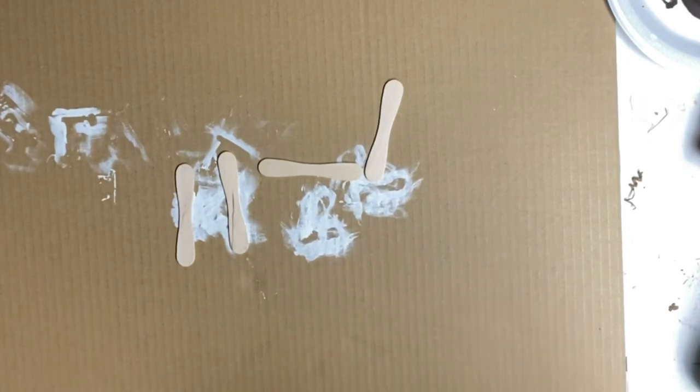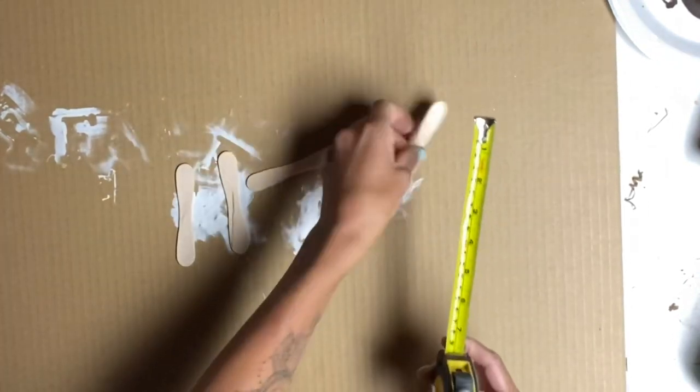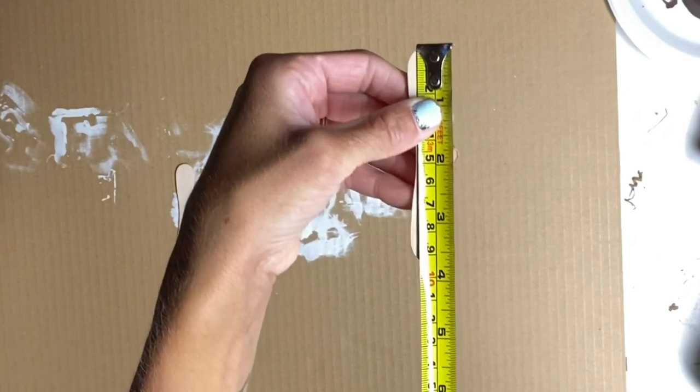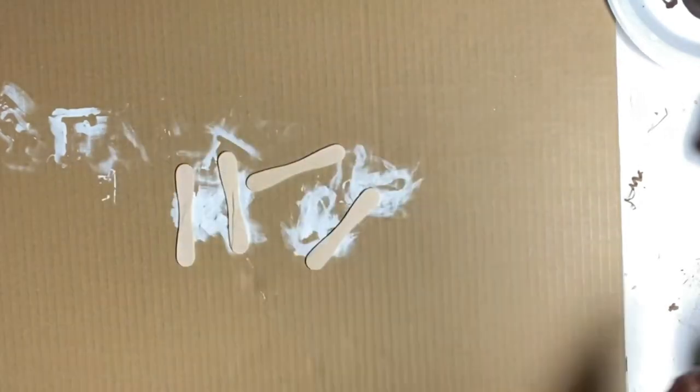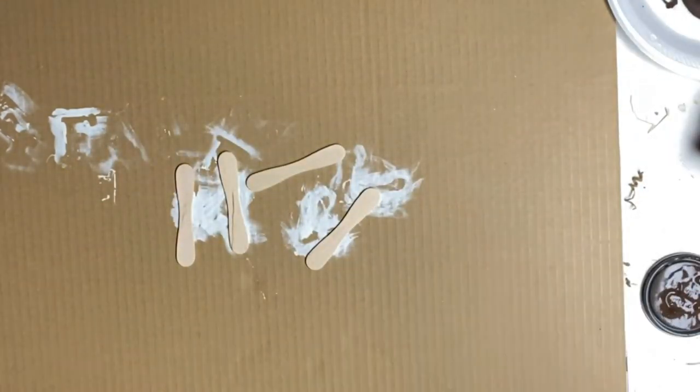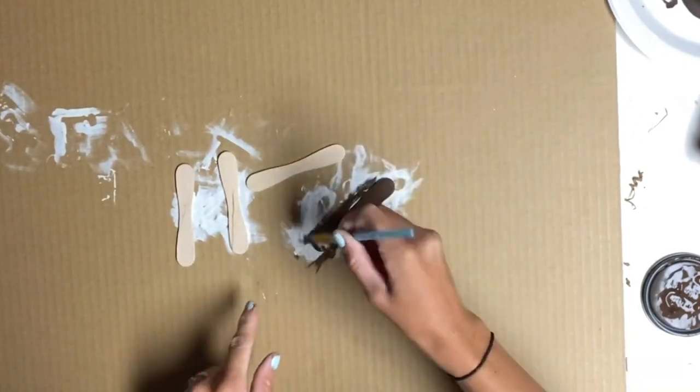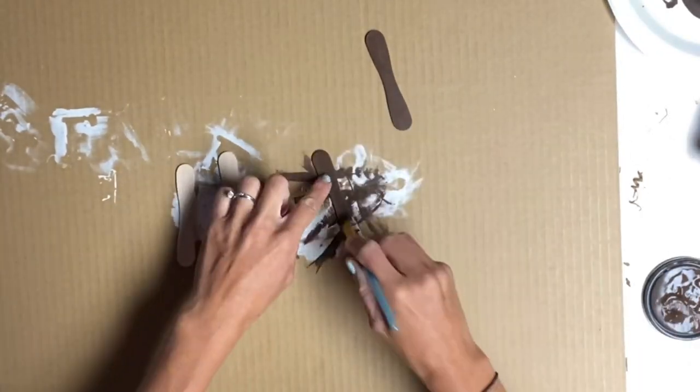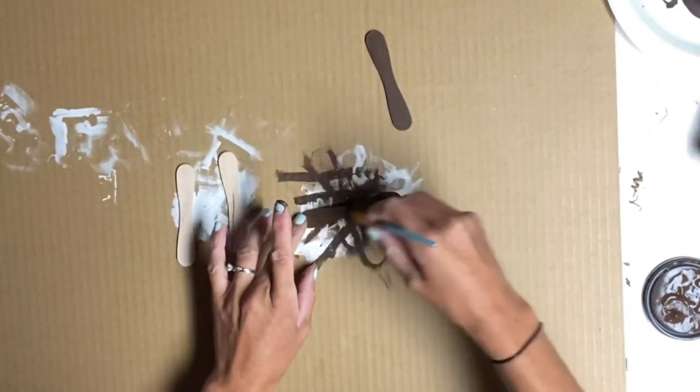I then grabbed these bow tie-shaped popsicle sticks. I got them from Hobby Lobby, they're three and a half inches long. I took some more of the General Finishes Gel Stain and covered two of the popsicle sticks with the gel stain on the front and back side.